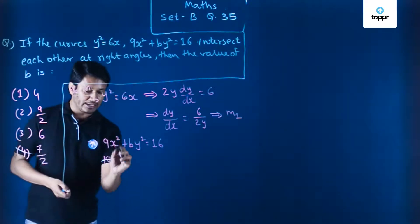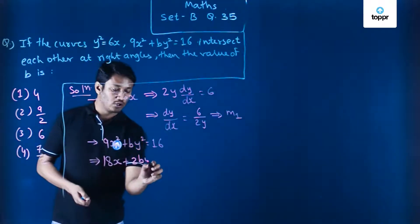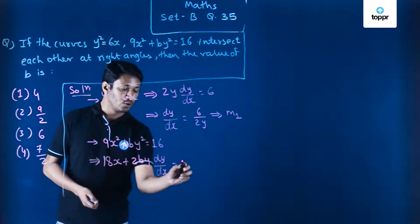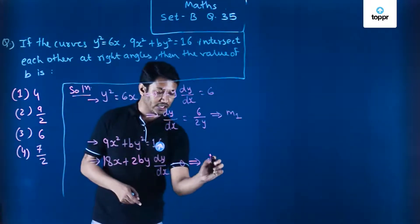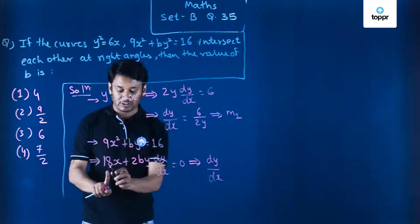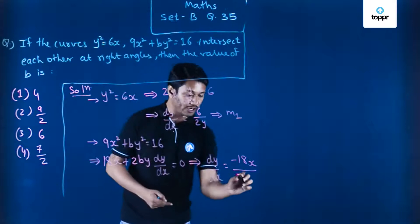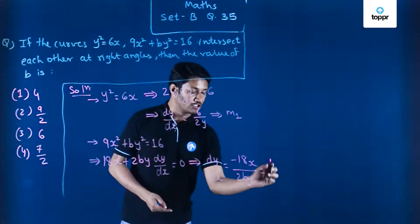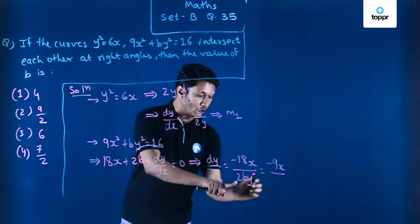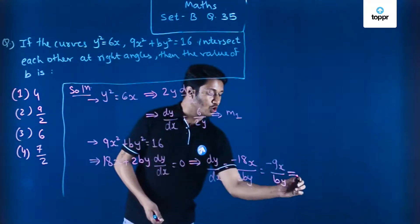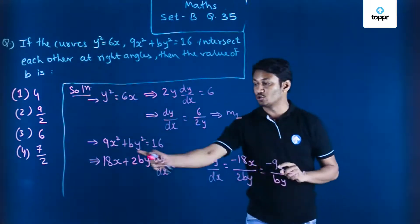So what do we get? This becomes 18x + 2by dy/dx = 0. So let me rearrange the terms. dy/dx is what we are looking for. So dy/dx will be nothing but -18x divided by 2by. So this will be further -9x/by, and now I'm going to call this as m₂. So this will be the slope of the second tangent, which will be tangent to the second curve.